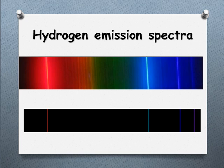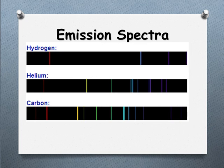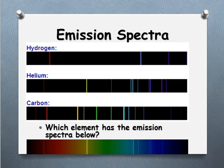Let's have a look at a few examples. Hydrogen has the four key spectral lines. Helium has more, and carbon has a wider range of different spectra. If we take the emission spectra for a random element and compare it, we can see the reds, yellows, blues, and purples correspond. We can clearly identify that the pattern matches the line spectra from helium.